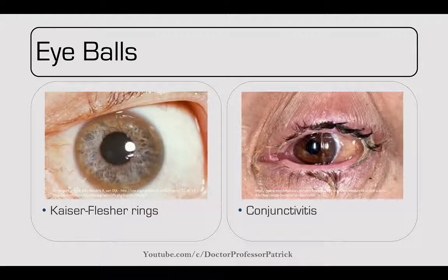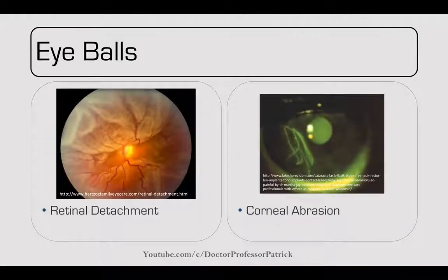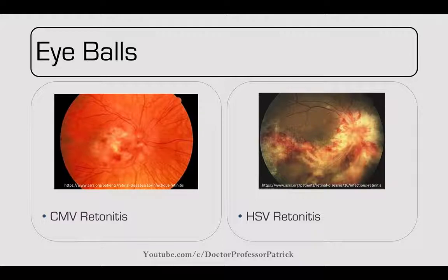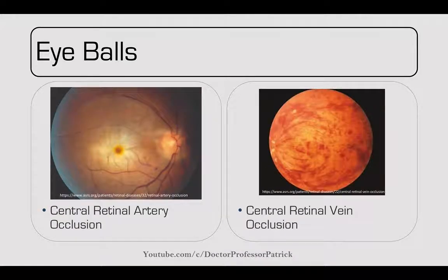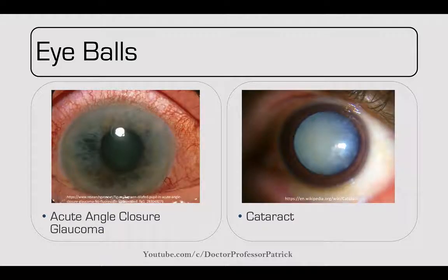Here are some eye images: first, you can see the Kayser-Fleischer rings. Then conjunctivitis with mucopurulent discharge. Next is a retinal detachment — the gray membrane at the top. Then corneal abrasion. CMV retinitis shows a fluffy picture; HSV retinitis looks more washed out. Central retinal artery occlusion — no vasculature reaching the fovea. Central retinal vein occlusion looks like Jupiter with tortuous veins and bleeding. Acute angle-closure glaucoma shows a hazy eye, tortuous vessels, and a stuck pupil. Then cataracts.